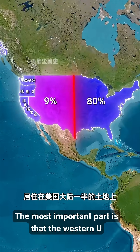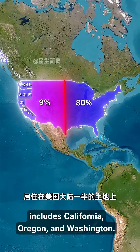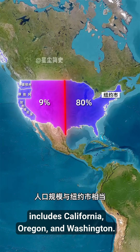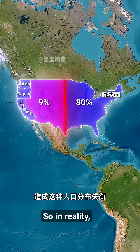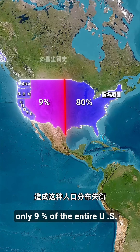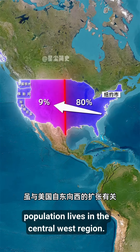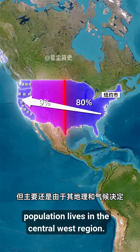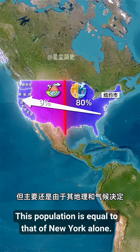The most important part is that the western U.S. includes California, Oregon, and Washington. So in reality, only 9% of the entire U.S. population lives in the central west region. This population is equal to that in New York alone.